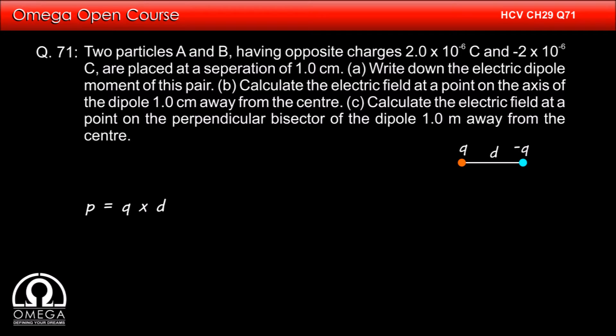The electric dipole moment is given by charge into distance, i.e., 2×10⁻⁶ × 0.01, which equals 2×10⁻⁸ coulomb meter. This is the answer to part A of the question.